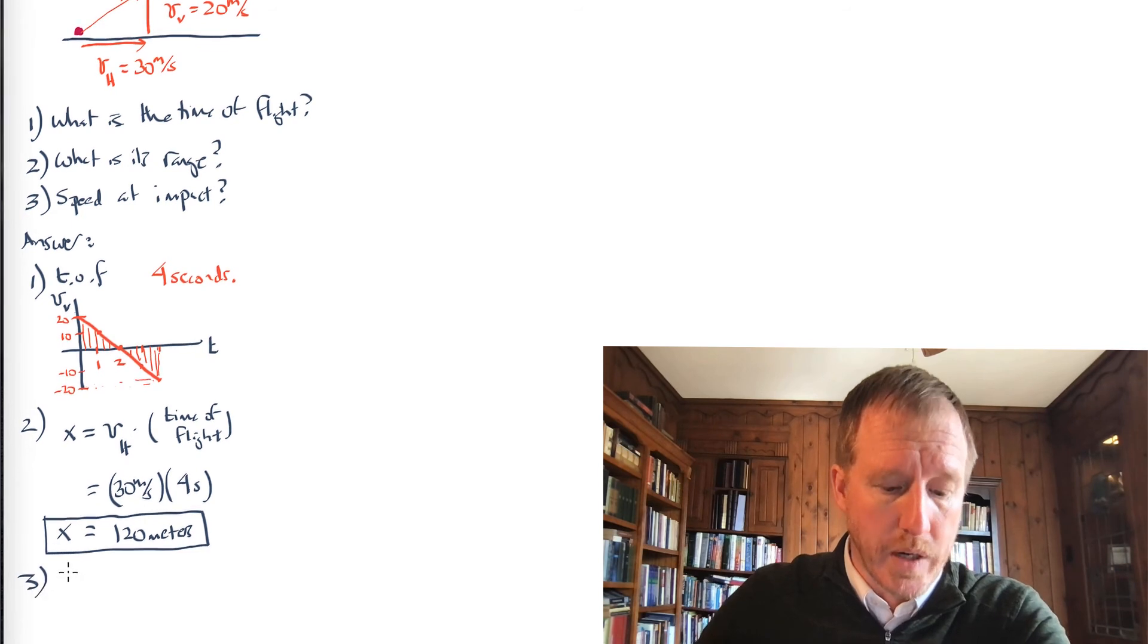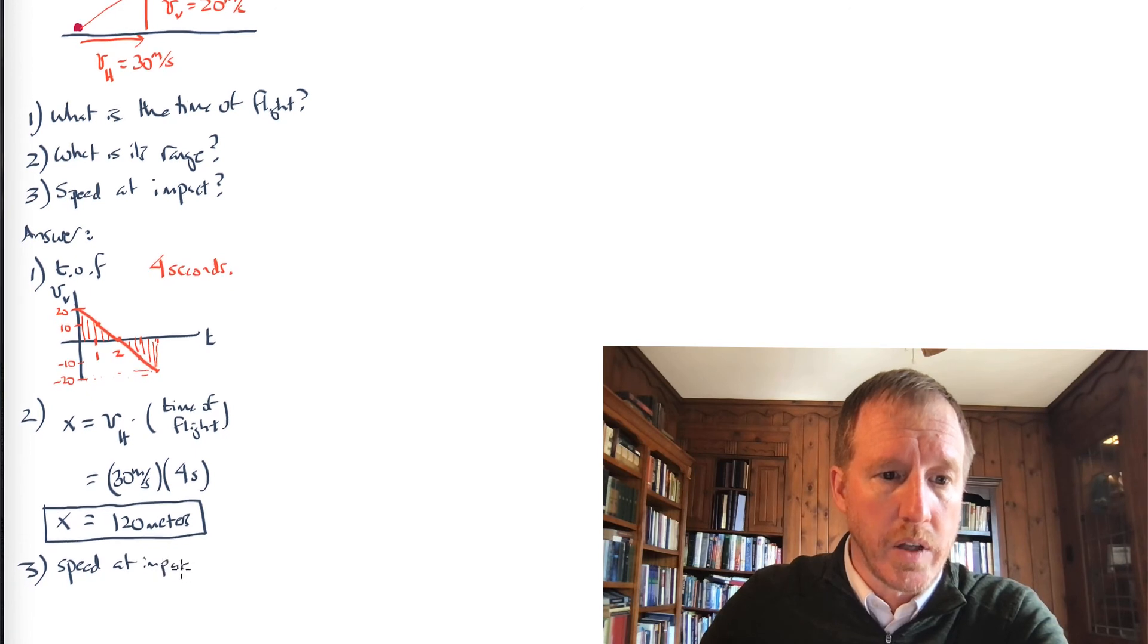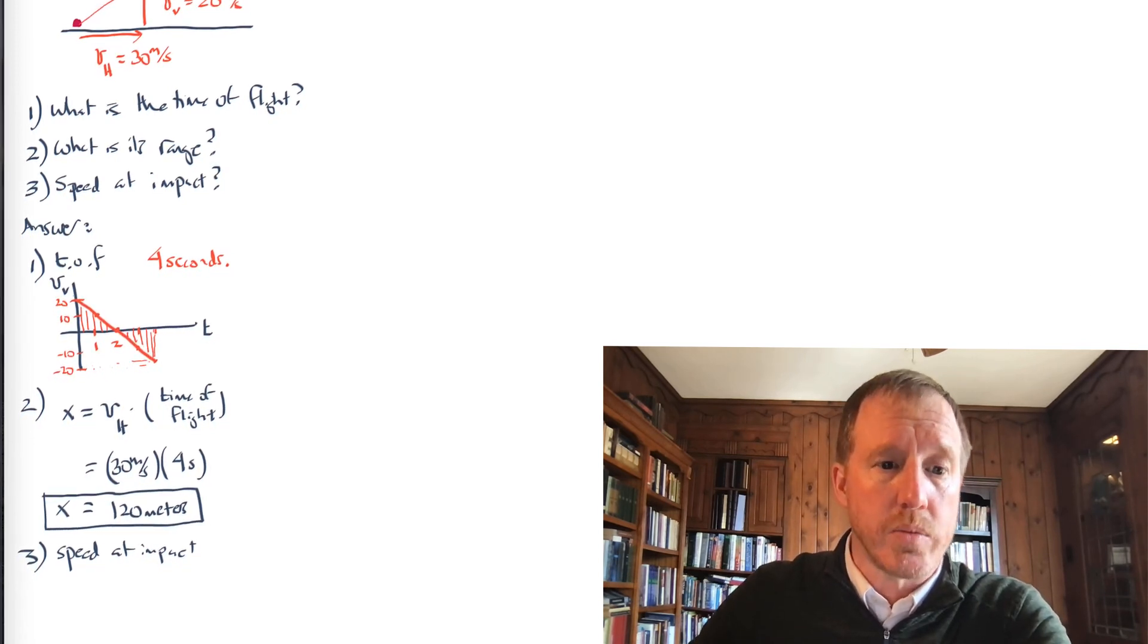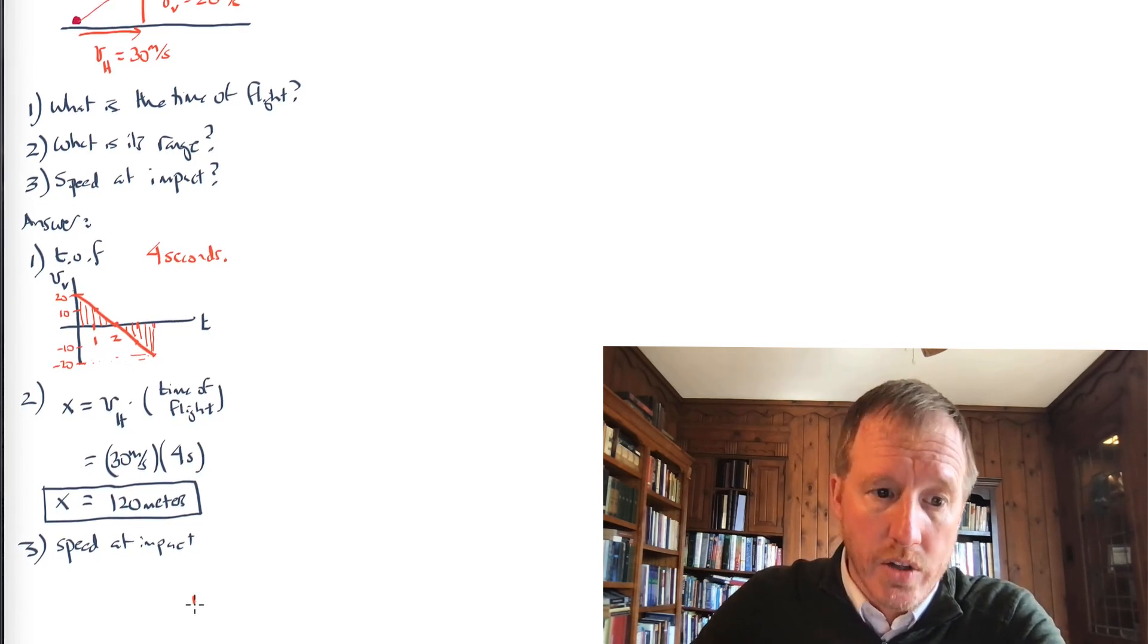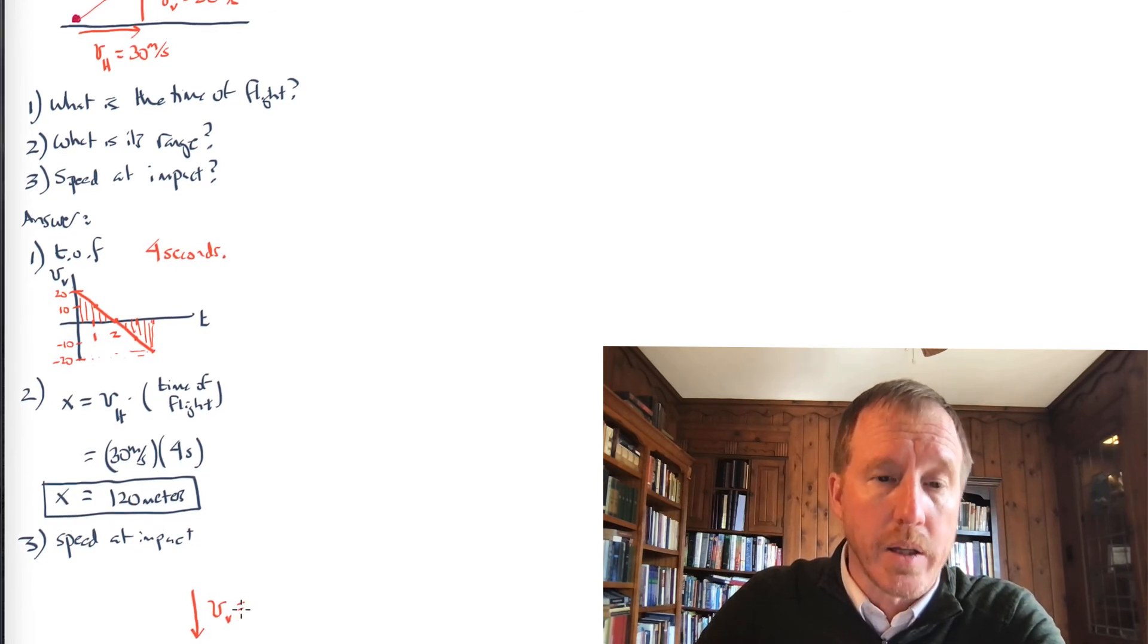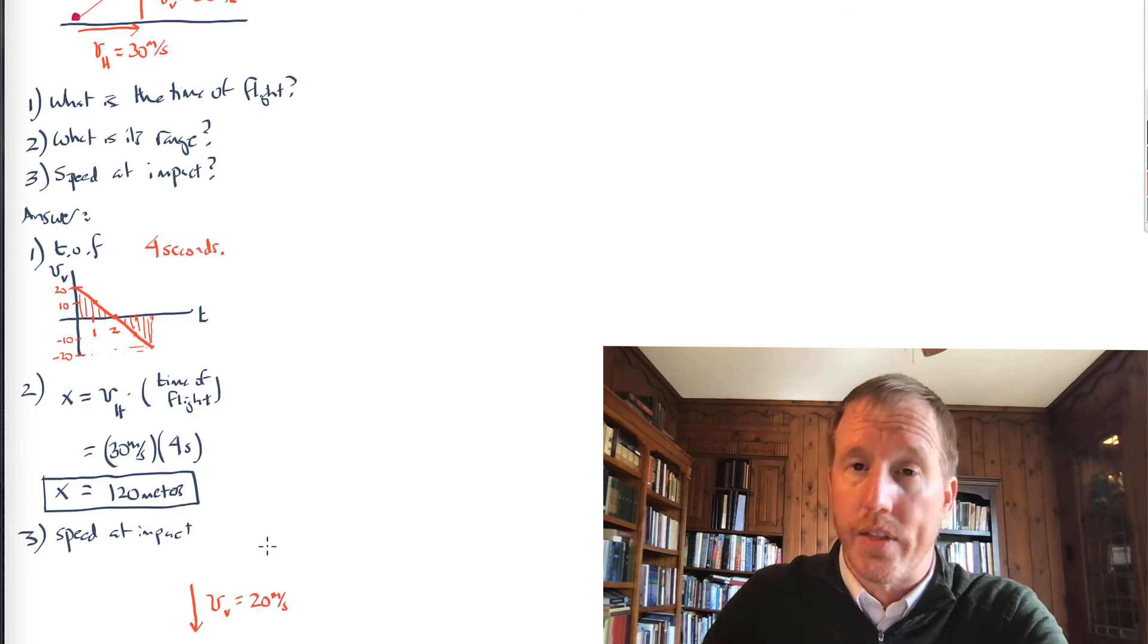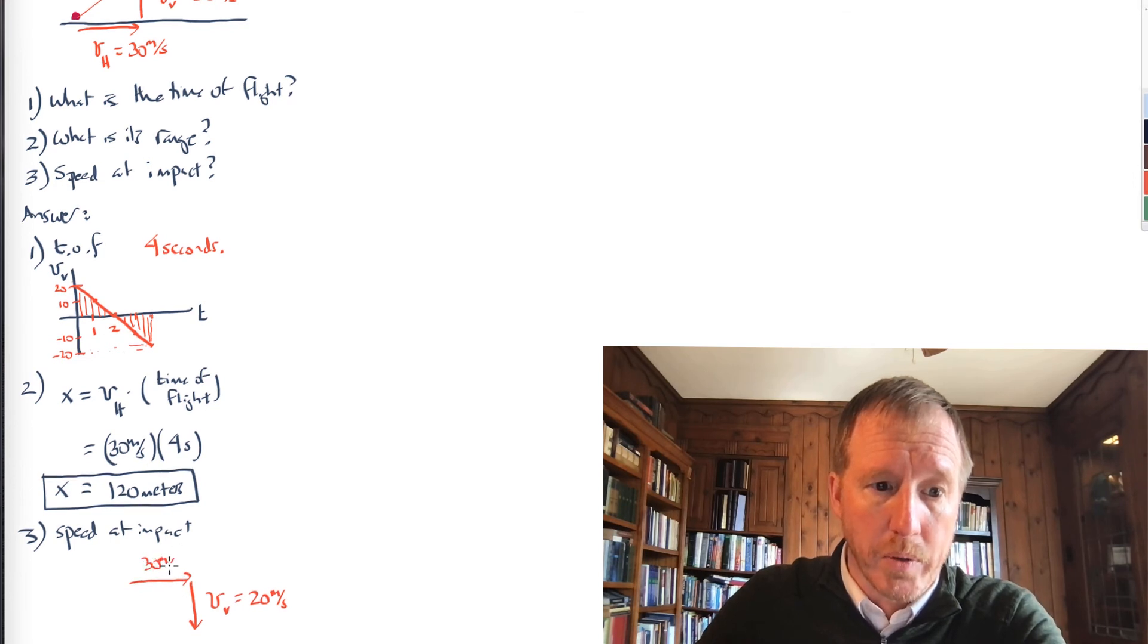Okay, what about part three of this problem? What is the speed that it has upon impact? Well, I'm going to draw a picture here. And notice that when it's flying upward, it's losing speed. When it's flying back downward, it's gaining speed. And so just before it hits the ground, it has the exact same speed that it had when it was launched. So there's a downward vertical velocity. So the vertical velocity at the moment it hits the ground is still going to be 20 meters per second, but it's going to be a downward velocity. And what about the horizontal speed? Well, that didn't change according to our theory. So the horizontal speed is going to be 30 meters per second still.